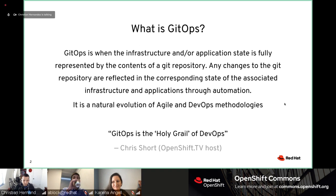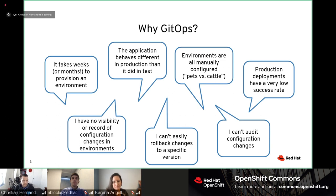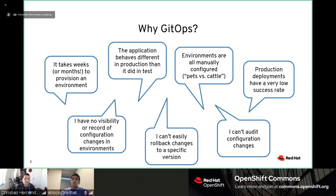So why GitOps? These are some of the challenges it addresses: it takes weeks or even months to get an environment, my application behaves differently in production than in test, and production deployments have a very low success rate. When you look at these challenges that GitOps addresses, these are actually also things that DevOps addresses. So what's the real difference between GitOps and DevOps, and how are they tied together?